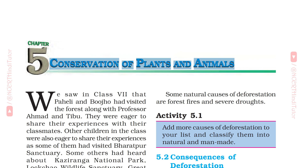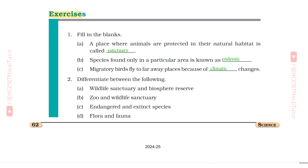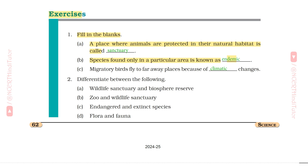Chapter 5 Conservation of Plants and Animals, Question-Answers from Class 8 Subject Science. Exercises Question 1: Fill in the Blanks. A. A place where animals are protected in their natural habitat is called Sanctuary. B. Species found only in a particular area is known as endemic. C. Migratory birds fly to faraway places because of climatic changes.